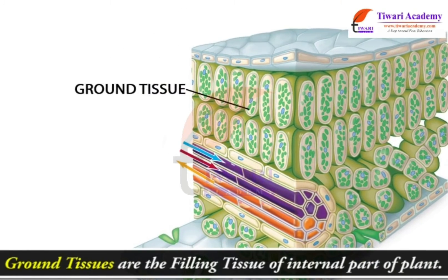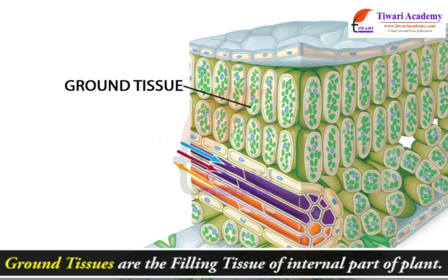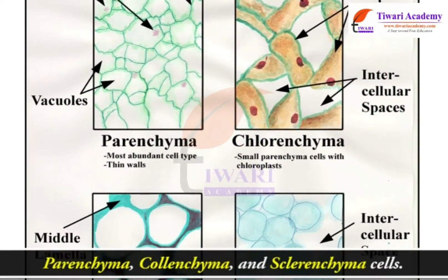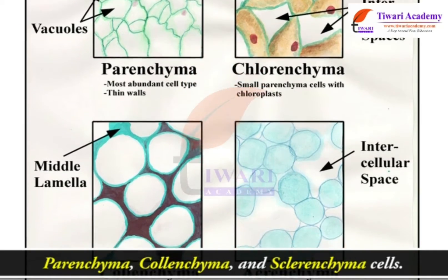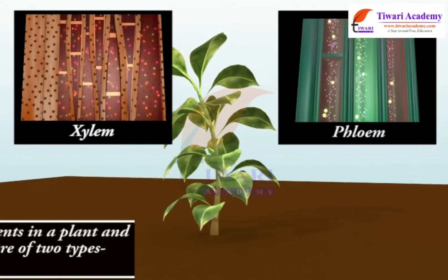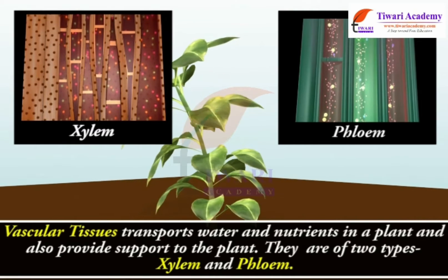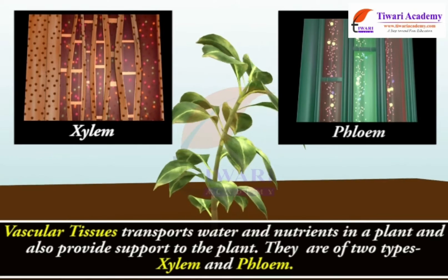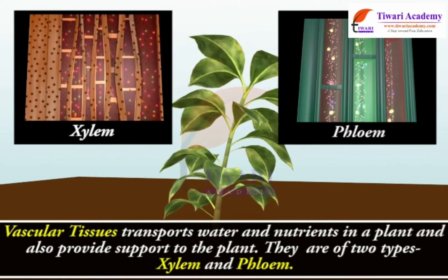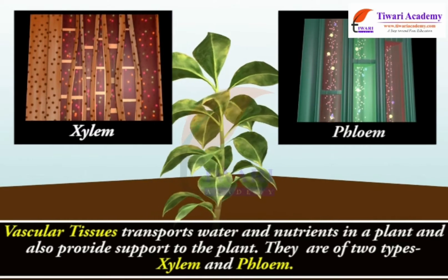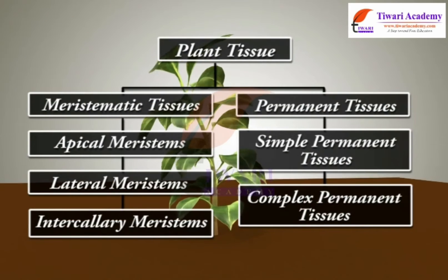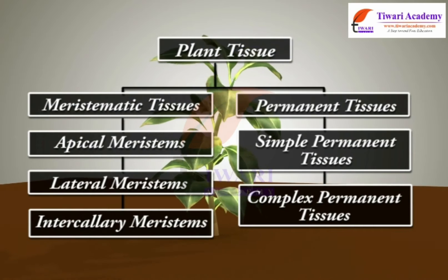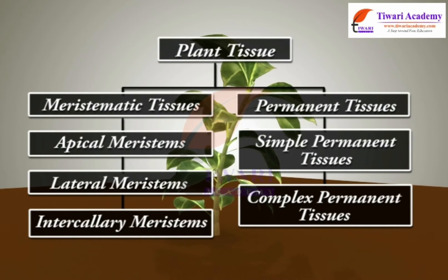Ground tissues are the filling tissue of the internal parts of a plant. They contain parenchyma, colenchyma, and sclerenchyma cells. Vascular tissues transport water and nutrients in a plant and also provide structural support. They are of two types: xylem and phloem. On the basis of their dividing capacity, plant tissues are of two types: meristematic and permanent.